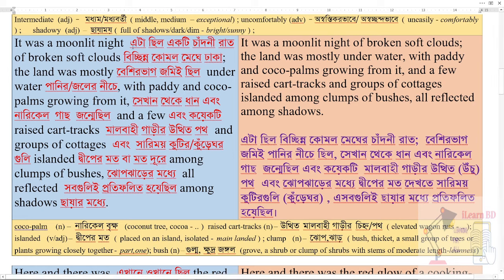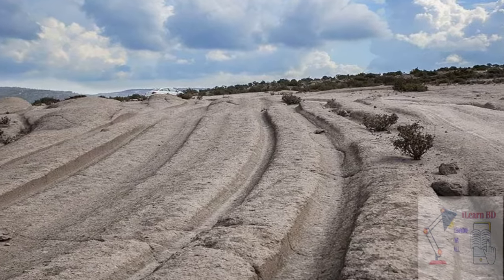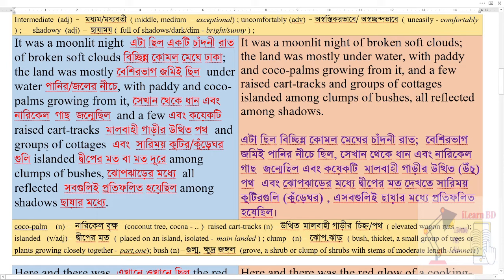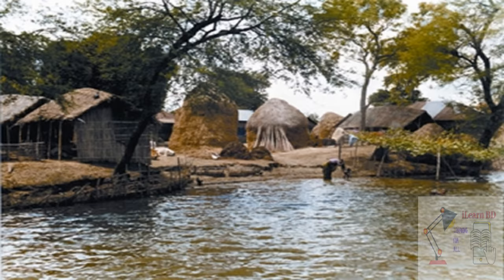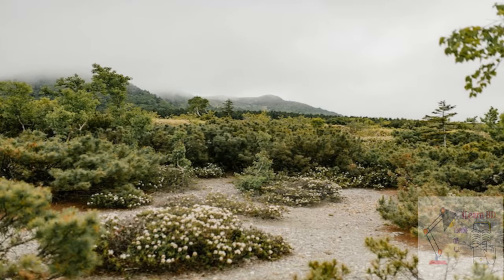It was a moonlit night, it was a broken soft cloud, the land was mostly underwater, with paddy and cocoa palms growing from it. And a few raised car tracks, and groups of cottages, among the clumps of bushes, and all reflected.